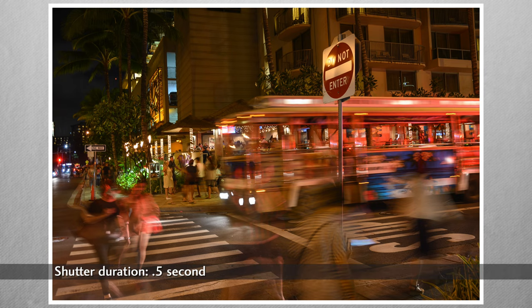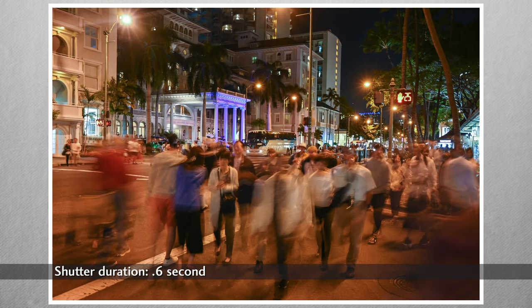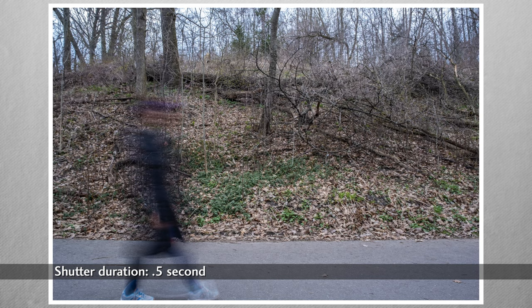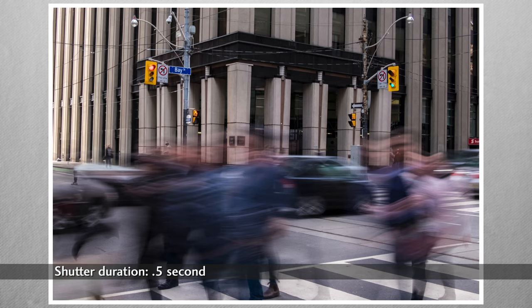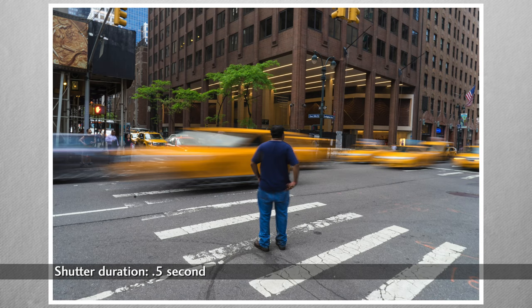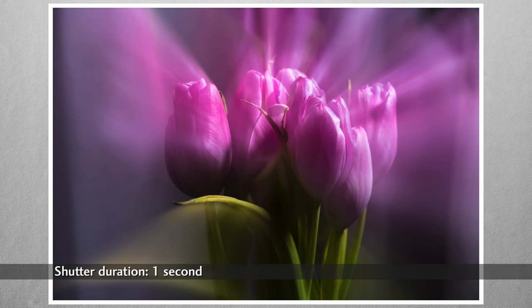At about half a second, some things in the image don't move — like trees and buildings — while others, like pedestrians or taxi cabs, do. I love the magic of longer exposures; the combination of blurred action with a static scene makes for compelling photographs. And there are other ways to exploit this — here I zoomed while taking a one-second exposure.